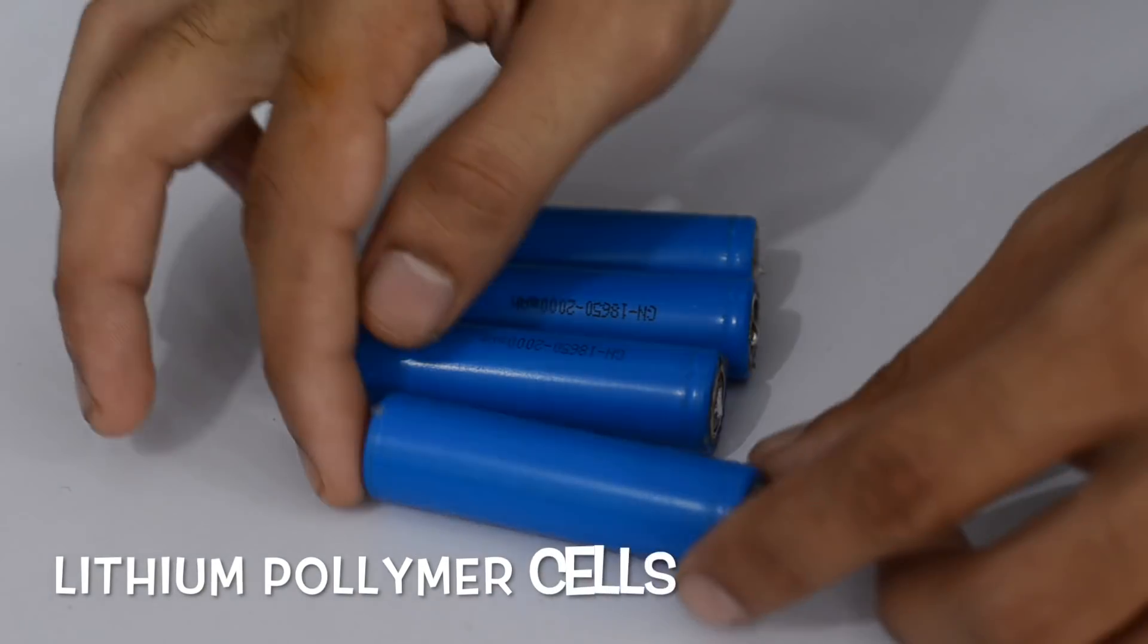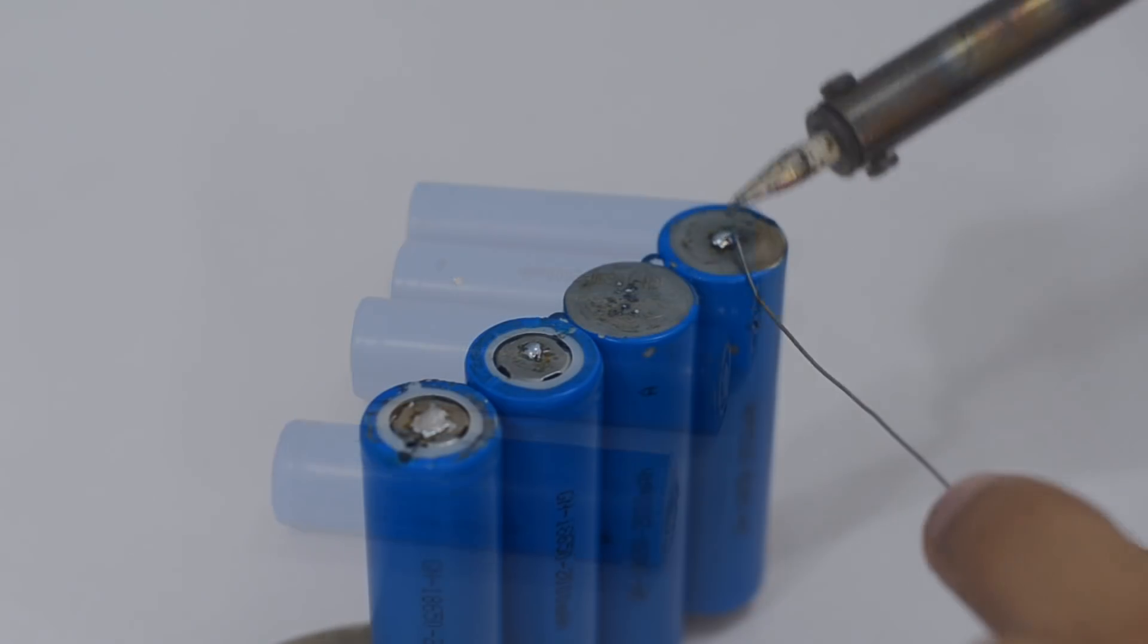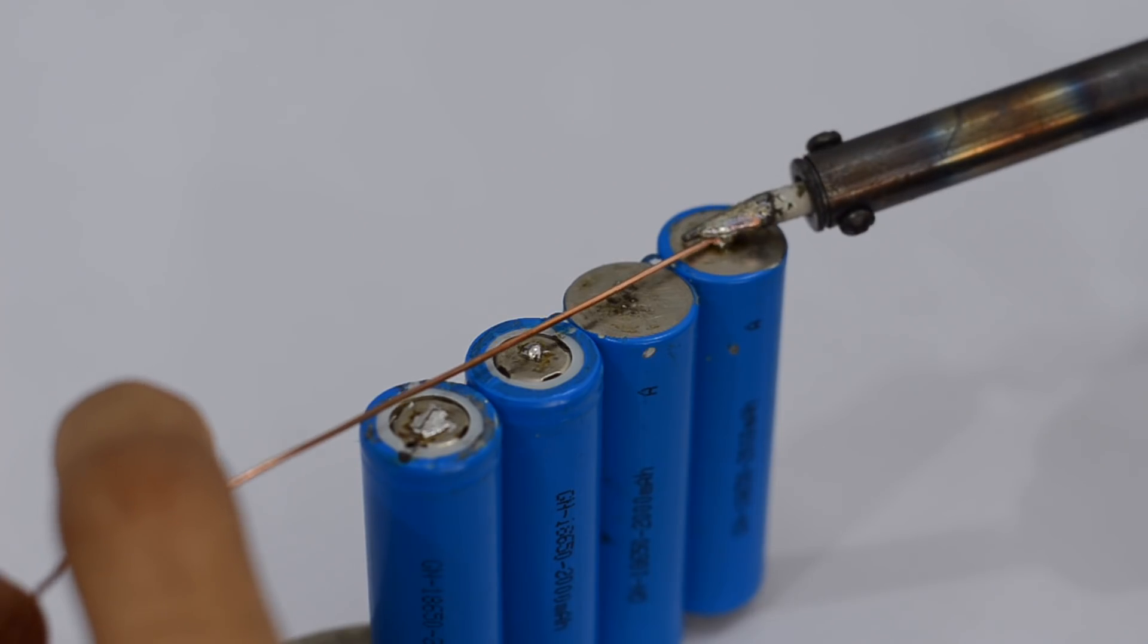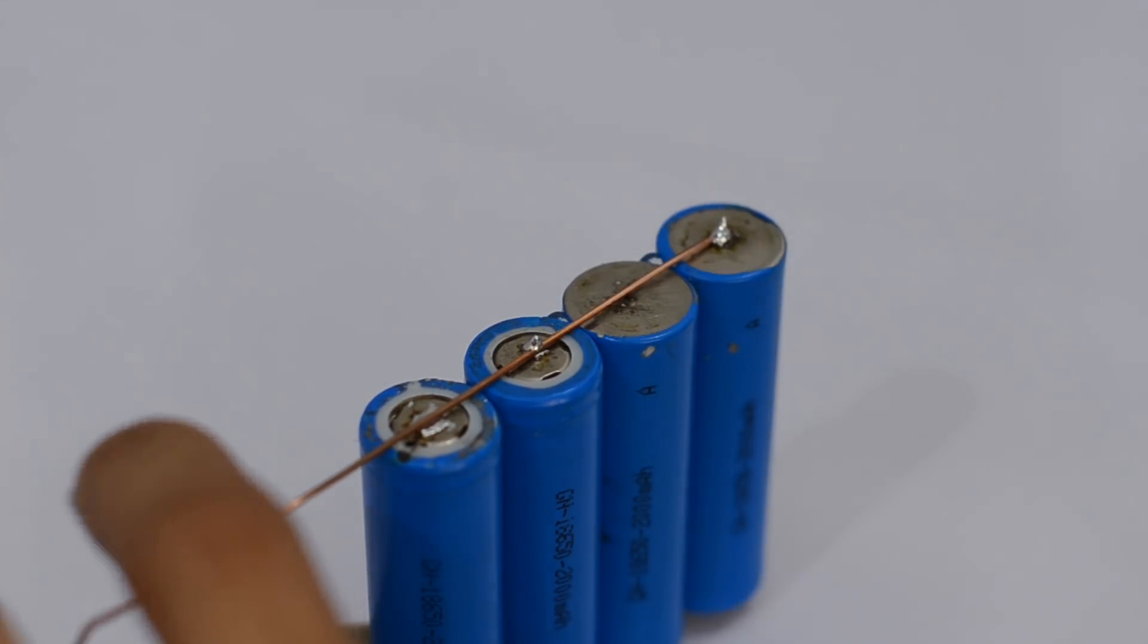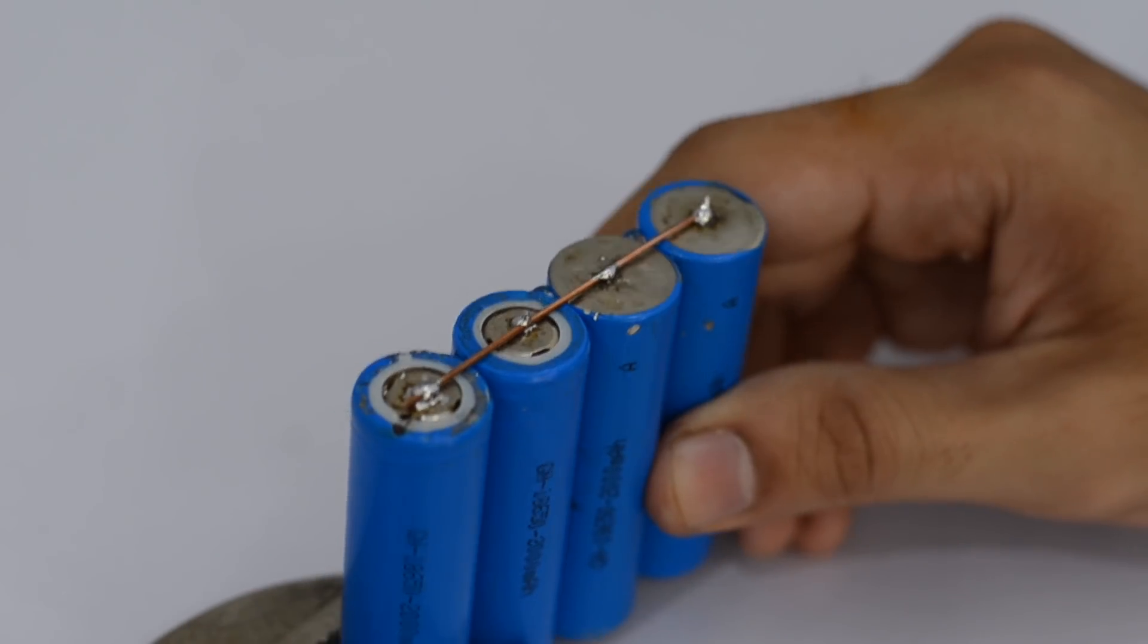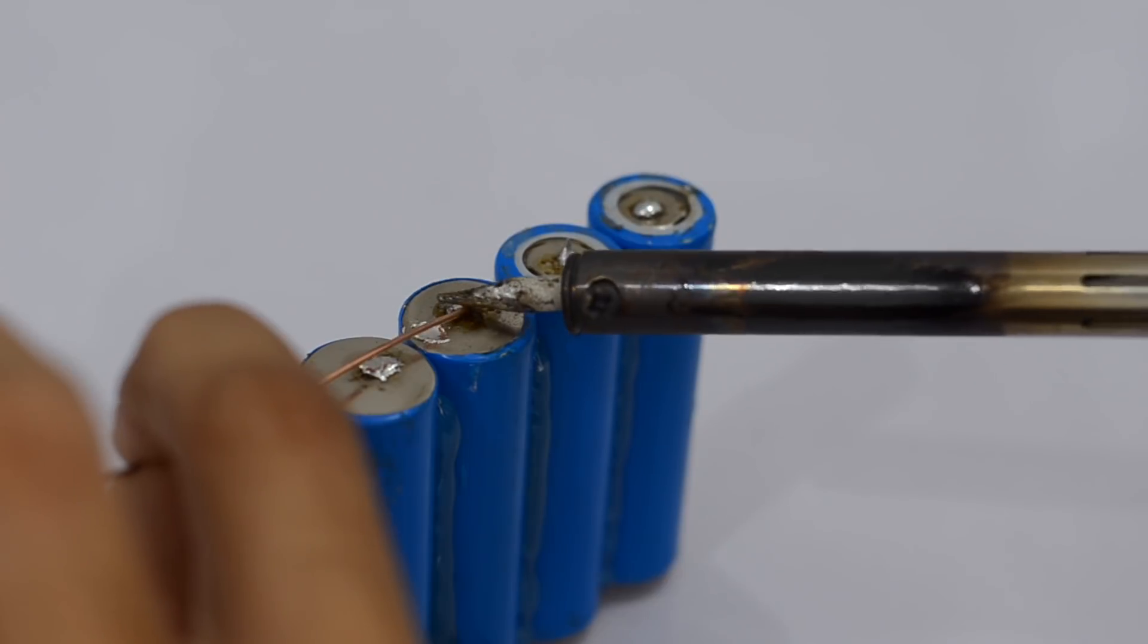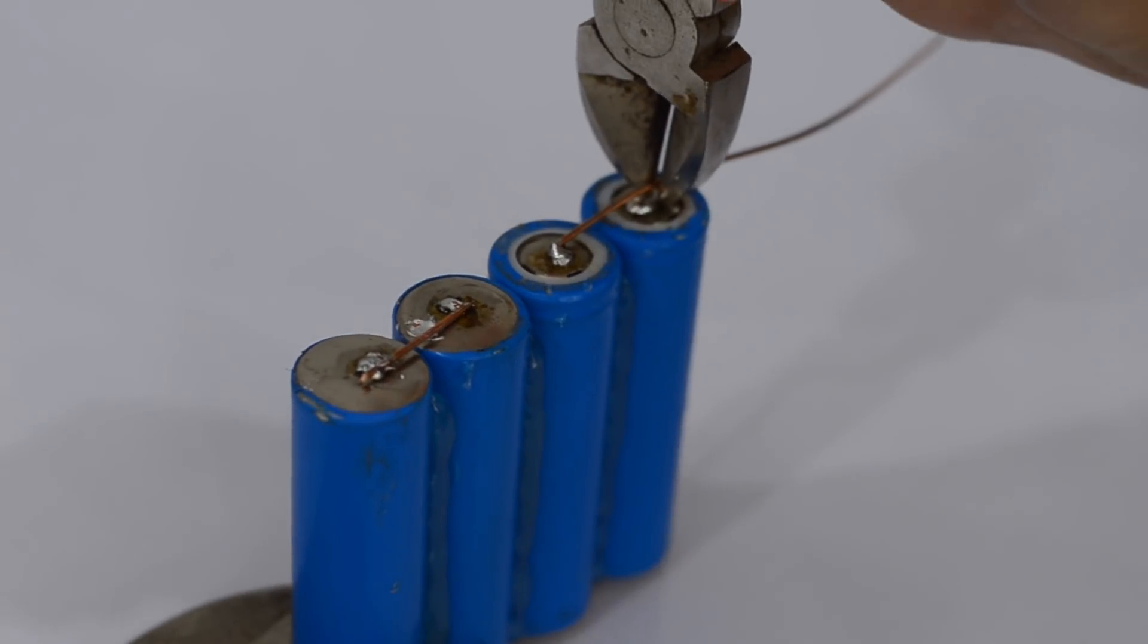To power this foam cutter, I'm going to use lithium ion cells that I've got from an old laptop battery. Here, I'm going to use four of them, two of which are connected in parallel, and two such packs are connected in series to form a 7.4V battery pack having a capacity of nearly 4000 mAh. Well, that is sufficient for a lot of foam cutting.